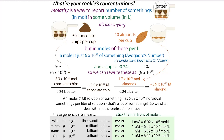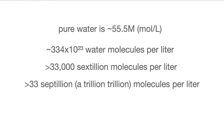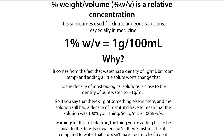We typically talk in terms of molarity, which is moles per liter, where a mole is like a biochemist's dozen — instead of 12, it means 6 × 10²³ of something; this is Avogadro's number. If we were to calculate the concentration of normal saline in terms of molarity, we get about 0.15 molar. Compare this to the molarity of pure water, which is about 55.5 molar. You can see that even though we have salt in our solution, it's still mainly water — about 33 septillion molecules per liter — so the salt doesn't influence the density much. This confirms the simplification that percent weight-volume is similar to percent weight-weight for dilute solutions.